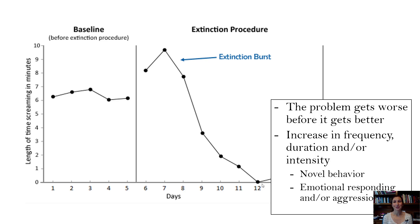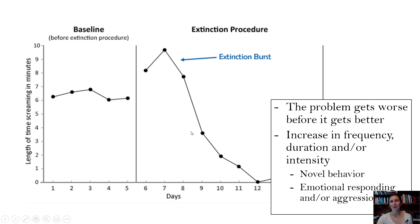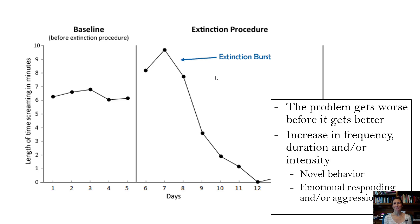You have to be really careful when implementing extinction because you must not reinforce the behavior during the extinction burst. If the crying gets worse on day two and you start providing attention, you've reinforced an instance of problem behavior that is way worse than when you started. Only implement extinction if you're aware there will be an extinction burst and you can get through it. If there's a chance you'll reinforce the behavior when it gets worse, find another way.